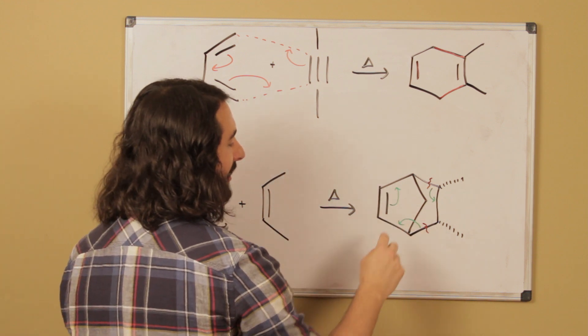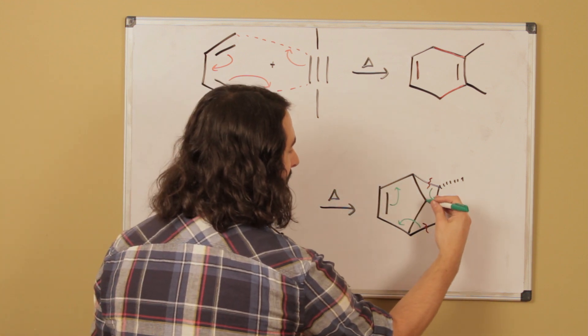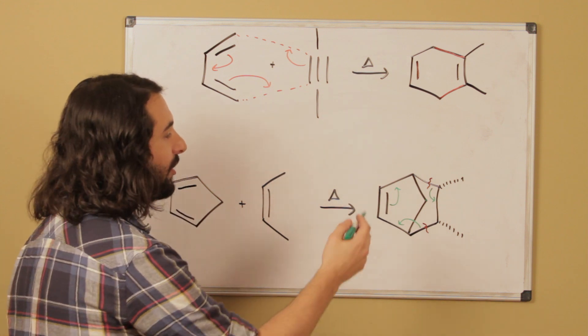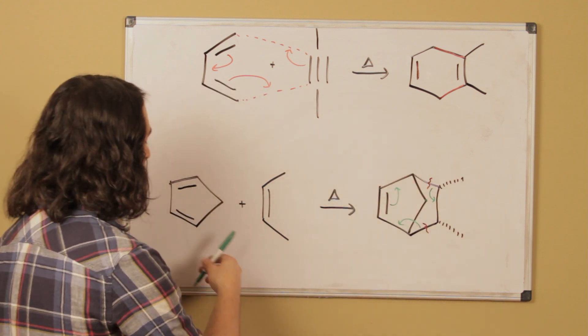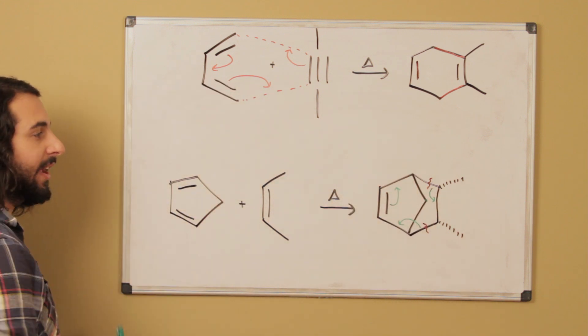And so what we're understanding is that this carbon here, this was not participating in the Diels-Alder reaction, but it was part of the diene because the diene must have been this five membered ring, right?